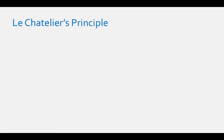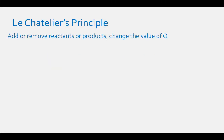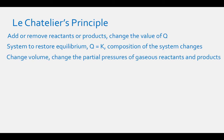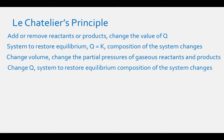If we add or remove reactants or products from an equilibrium mixture, we change the value of Q. For the reaction to get back to equilibrium, or for Q to equal K, the composition of the system must change to restore equilibrium. If we change the volume of a container that contains a gaseous equilibrium system, then we change the partial pressures of the gaseous reactants and products, which changes Q, and the composition of the system must change to restore equilibrium.